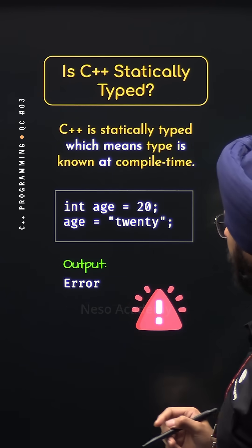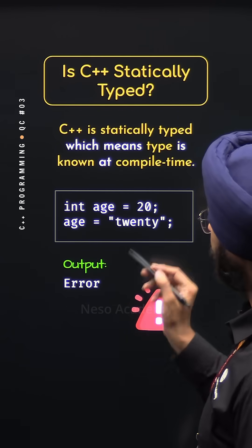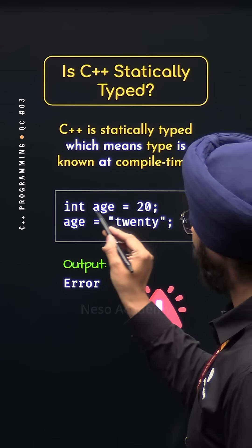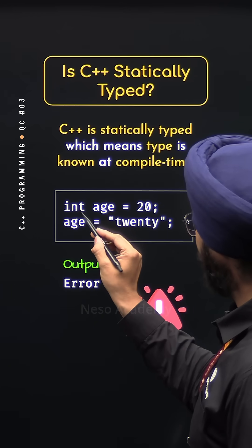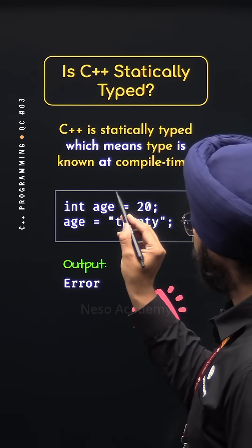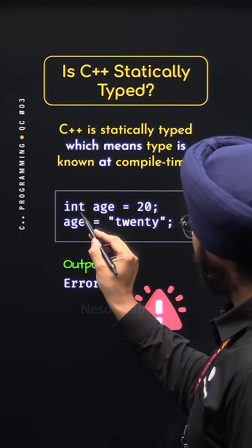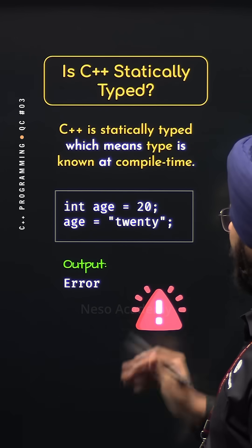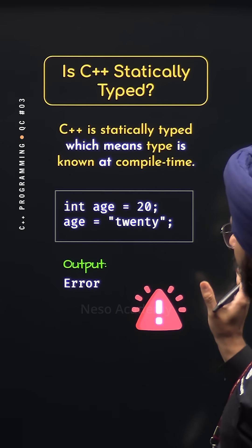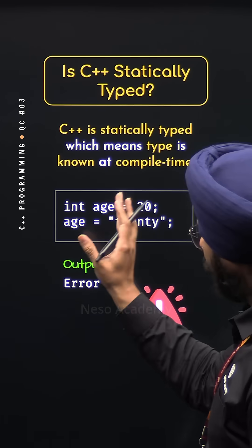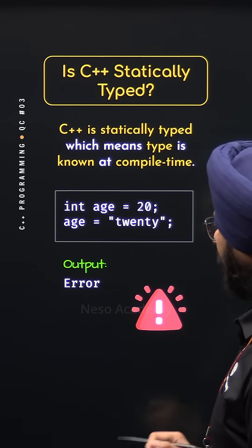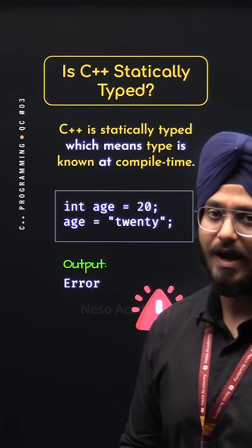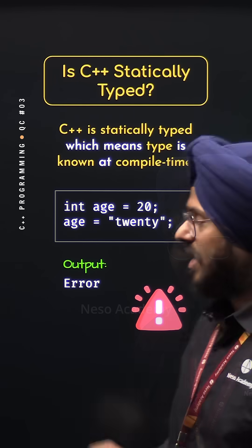We are getting an error from the compiler because the compiler already knows the type of this variable. This variable is of type integer. Therefore, it can only hold an integer value. If we try to assign a different kind of value to it, then the compiler will throw an error.